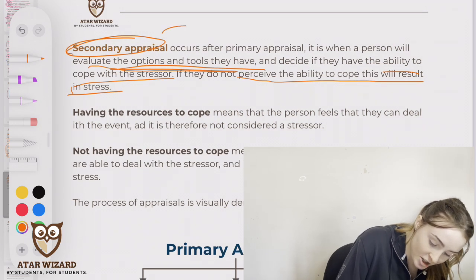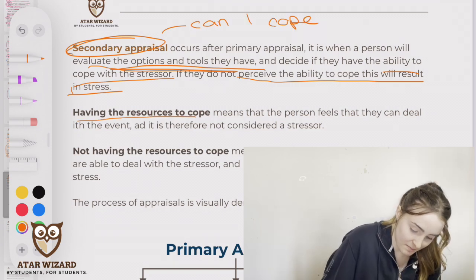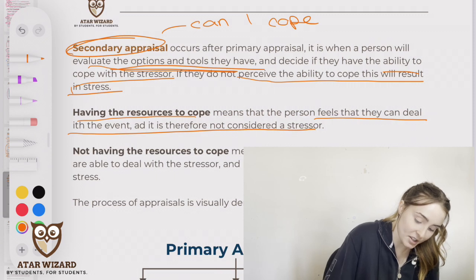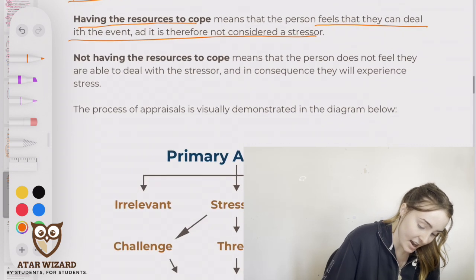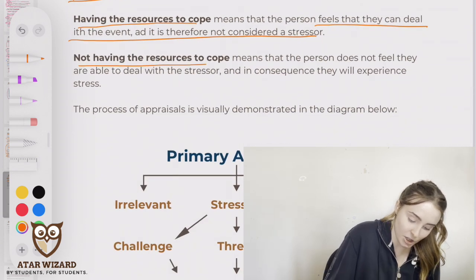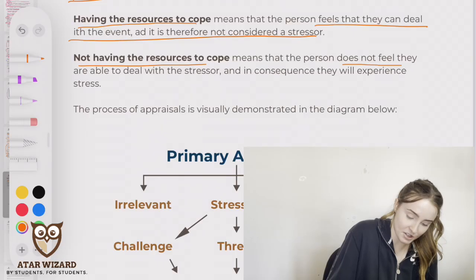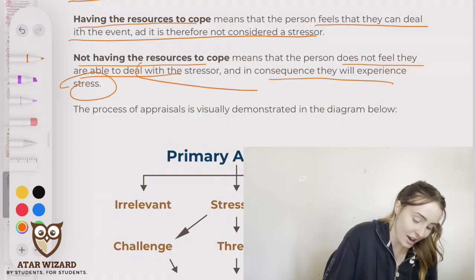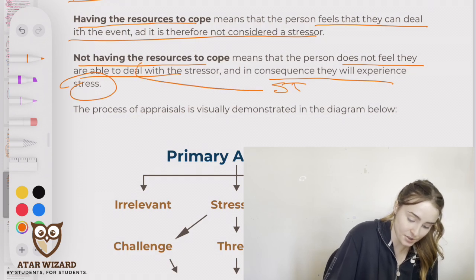Secondary appraisal is essentially asking: can I cope? Having the resources to cope means the person feels they can deal with the event and it is therefore not considered a stressor. Not having the resources to cope means the person does not feel able to deal with the stressor and, in consequence, will experience stress.